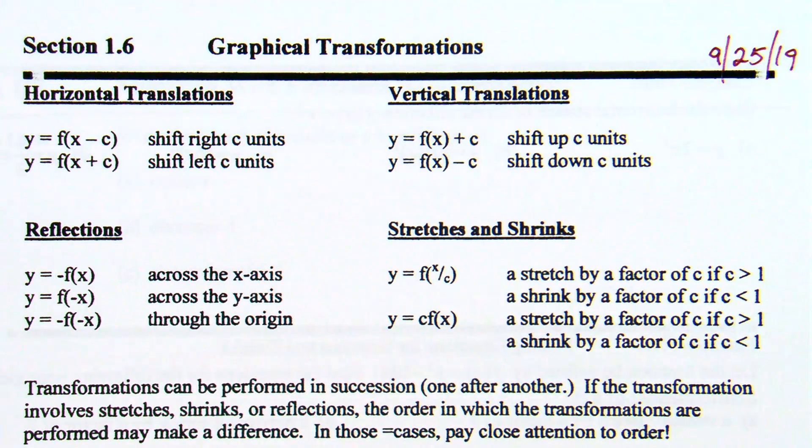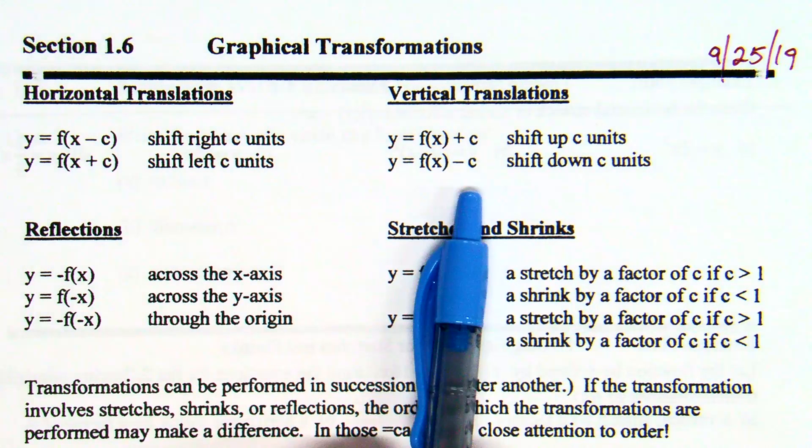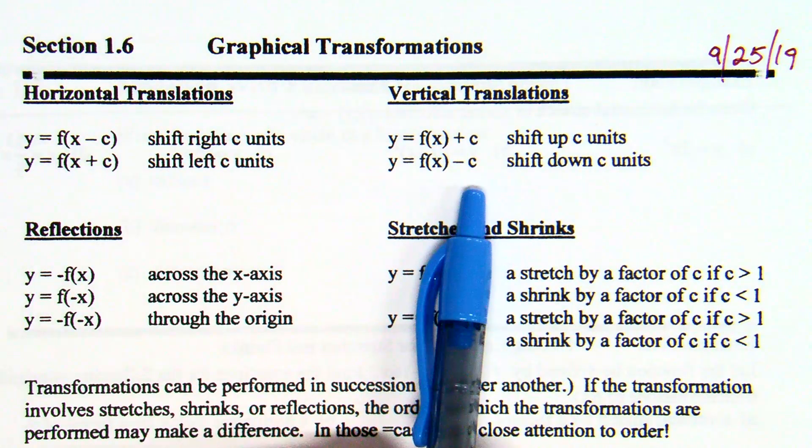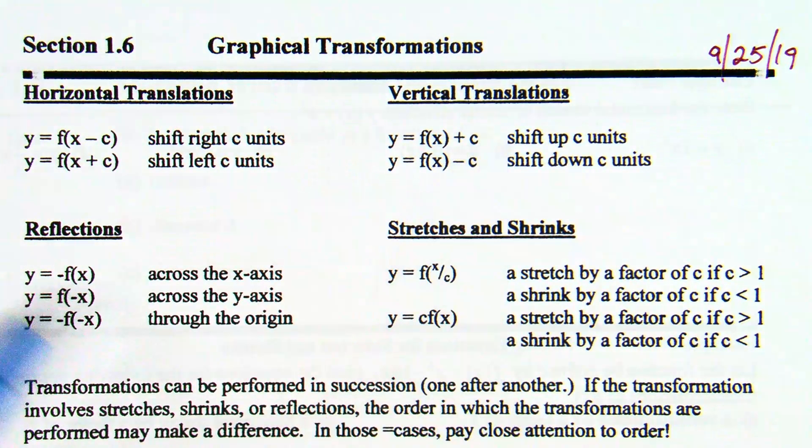If it says X minus C, you're going to go right C. If it says plus C, you're going to go left C. How do we know when to go up or down? When the number is added or subtracted at the end, or in other words, not with the X, just in the equation somewhere. So plus C is up C, minus C is down C.